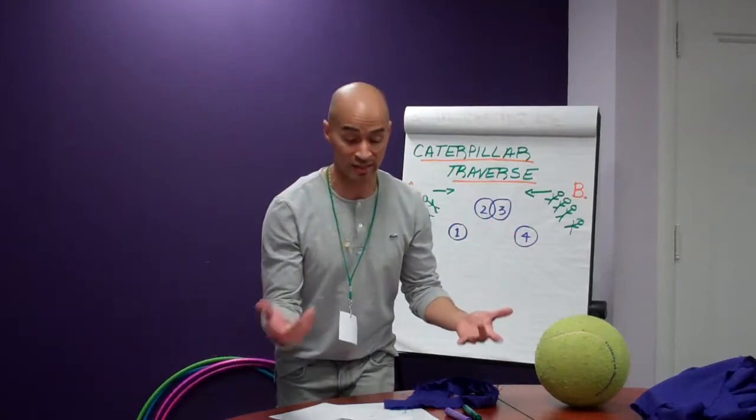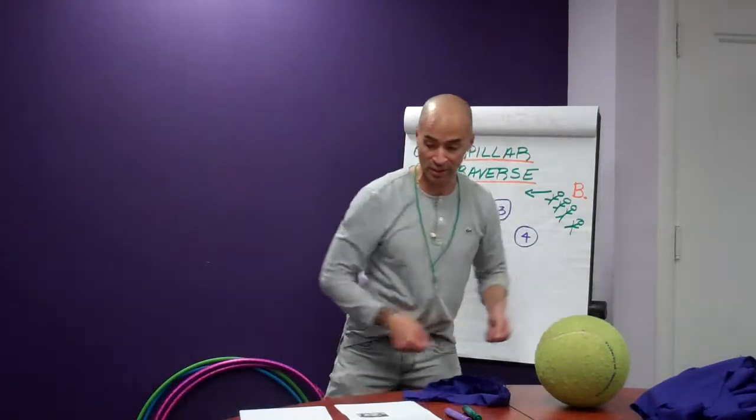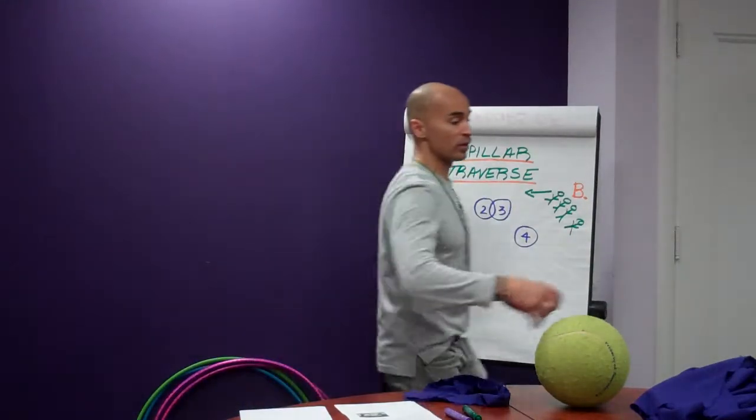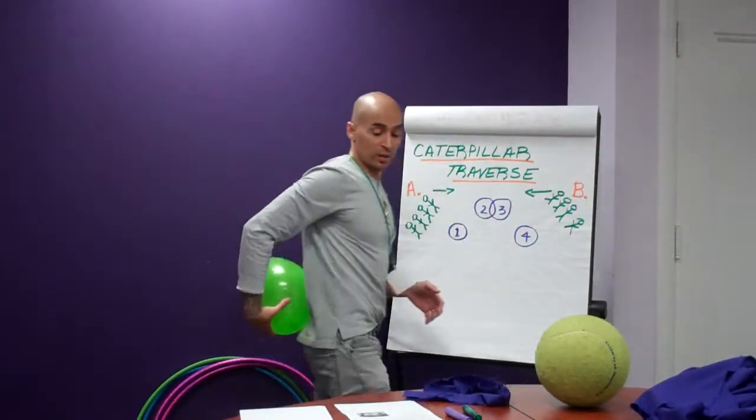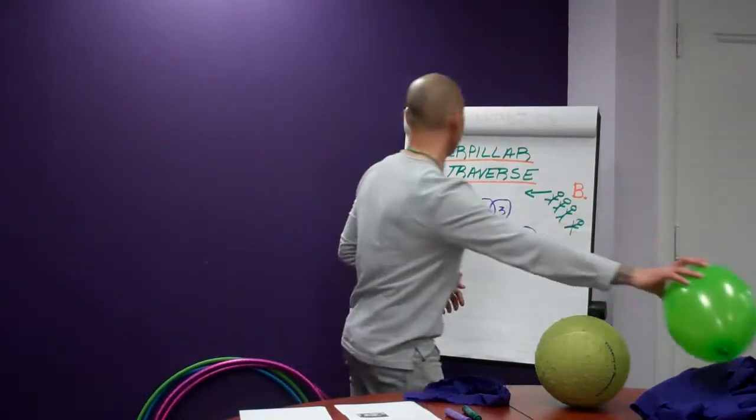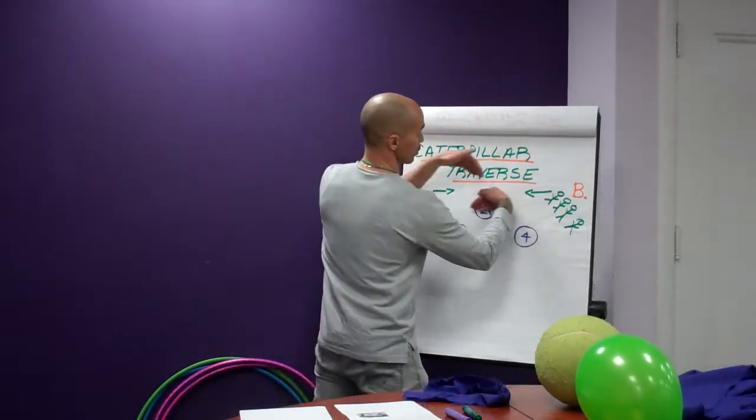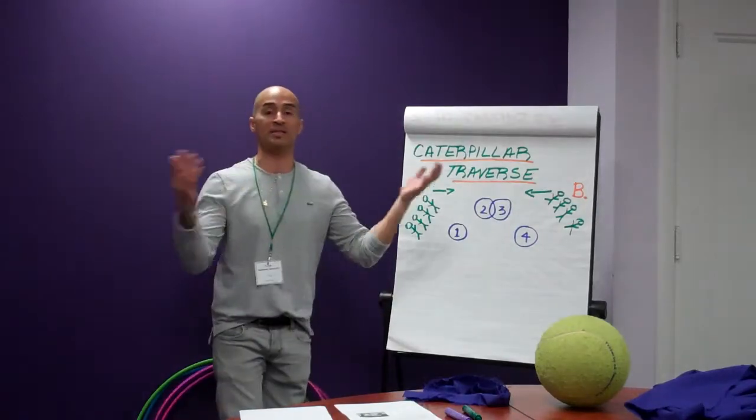Those are all the team building activities. Those are your three. You've got the beach volleyball. They're throwing a ball back and forth using a sheet. You've got the balloon one where they're using the balloon with their lower backs and running from one end and trying to come back to the other. And then you've got your caterpillar traverse where they're tied by their legs. They're going through these hula hoops trying to cross over and get to the opposite side.